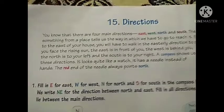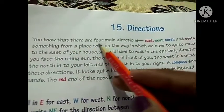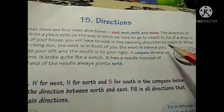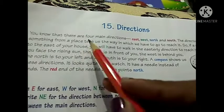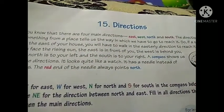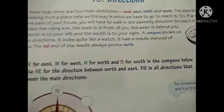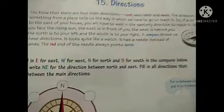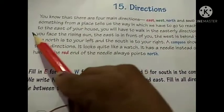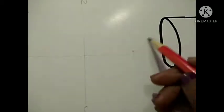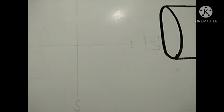You know that there are four main directions: East, West, North, and South. The direction of something from a place tells us the way in which we have to go to reach it. Direction is like a path that tells us where to go and which way to move. For example, if a shop is to the east of your house, you will have to walk in the easterly direction to reach it.